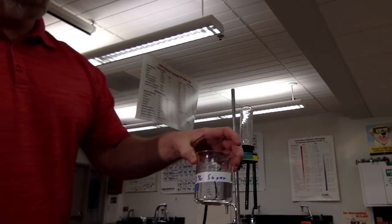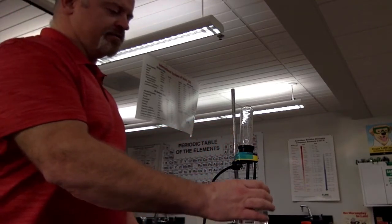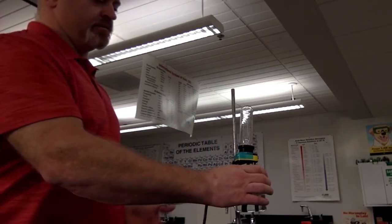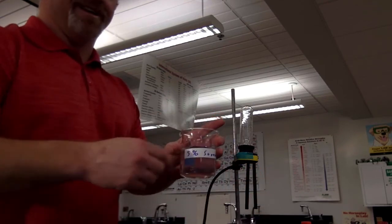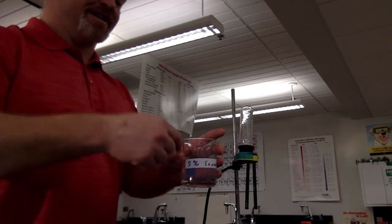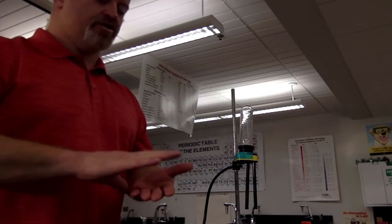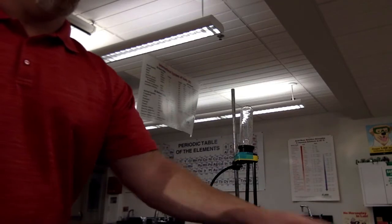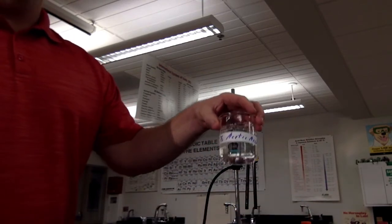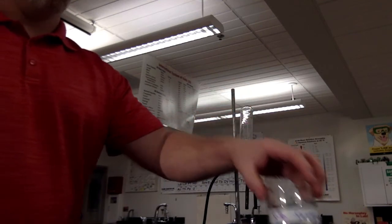Last one we're going to test is the sugar water. So same concentration of sugar water. We put this thing in, again, we get no conduction. So sugar, polar molecule, it does dissolve but does not conduct electricity. So with everything equal, if you are a strong electrolyte, there will be strong conduction. If you're a weak electrolyte, you're going to weakly conduct. If you're a non-electrolyte, you're not going to conduct.